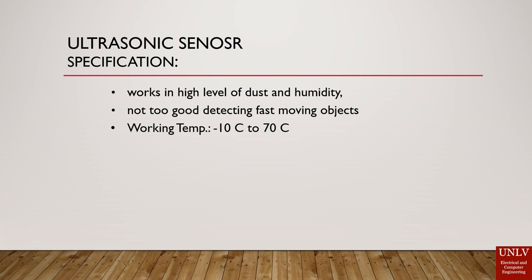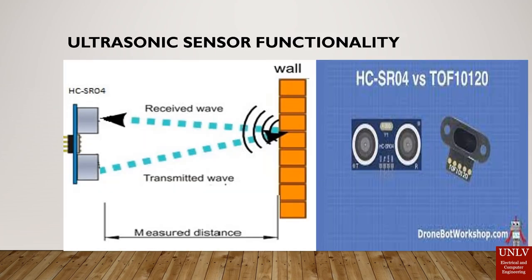We also have four ultrasonic sensors. The specifications of the ultrasonic sensors are that they work in humidity and dust, and they have a wide temperature range — from minus 10 degrees Celsius to 70 degrees Celsius. However, they do not perform well with fast-moving objects. Here is the design of the ultrasonic sensor.